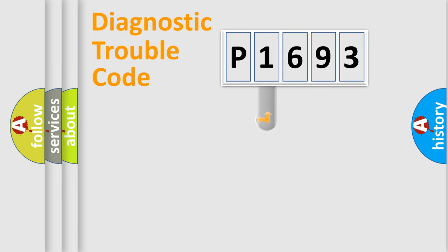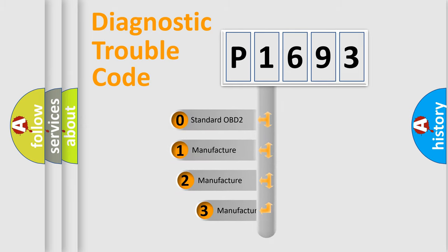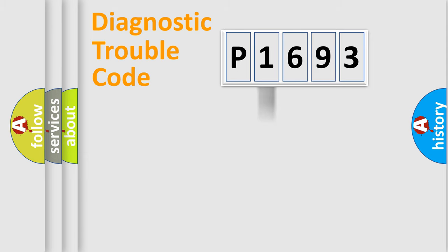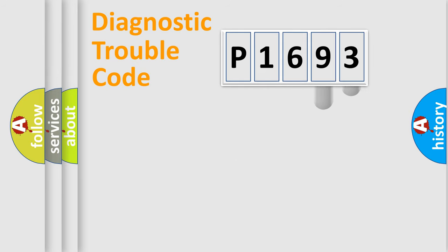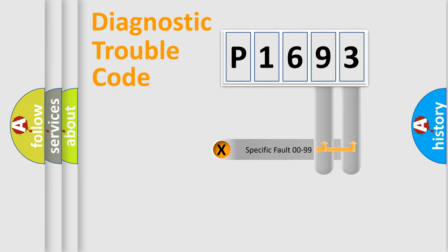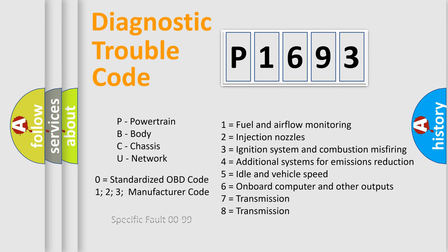This distribution is defined in the first character of the code. If the second character is expressed as zero, it is a standardized error. In the case of numbers 1, 2, or 3, it is a more specific car-manufacturer error. The third character specifies a subset of errors. The last two characters define the specific fault of the group. This division is valid only if the second character code is expressed by the number zero.